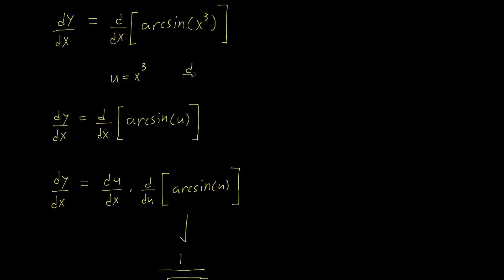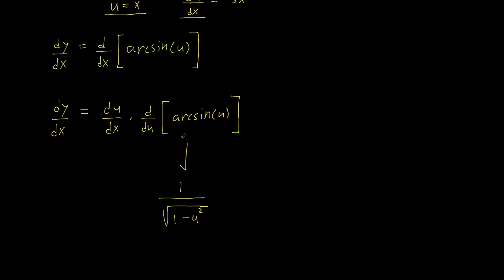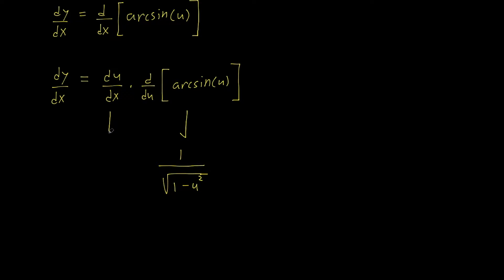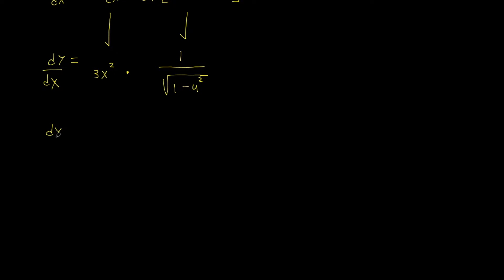du/dx is found by taking the derivative of u with respect to x from the equation u = x³. Using the power rule, we get du/dx equals 3x squared. So we replace du/dx in our equation: dy/dx equals 3x squared times one over the square root of one minus u squared.